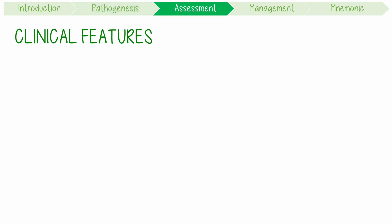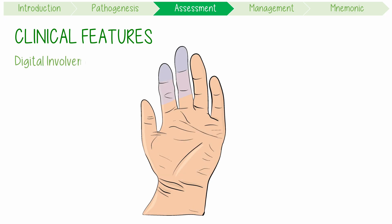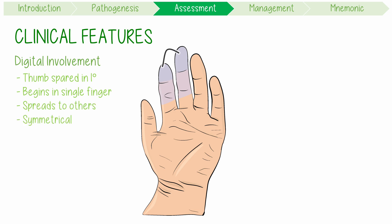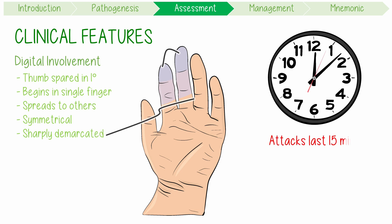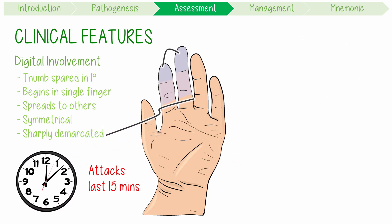Both primary and secondary Raynaud phenomenon most commonly affect the digits, like the fingers and toes. The thumb is often spared in primary RP, but not secondary. Attacks typically begin in a single finger and then spread to the other digits. This usually occurs symmetrically in both hands, with a sharply demarcated colour difference. Attacks last for 15-20 minutes if they are rewarmed, followed by blushing upon recovery.